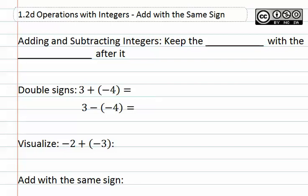1.2d, operations with integers, add with the same sign. Adding and subtracting integers, you keep the sign with the number that comes after it. What this means is that the sign in front of a number, such as -3 or negative three, means we keep this negative with the three.